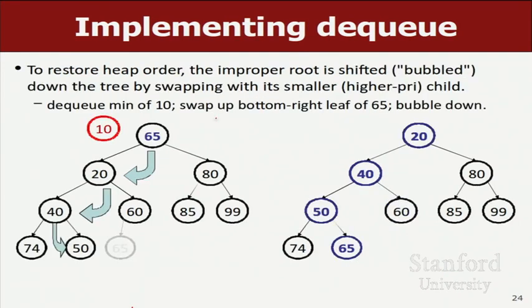The same thing happens when you're bubbling down on a dequeue operation: you swap the last element up to the front and then bubble it down — that's basically swapping parents down with their children. This is just another way of thinking about the structure you guys are implementing right now. I didn't show it to you this way when we first gave the assignment out because you didn't know what a binary tree was, but now you do.